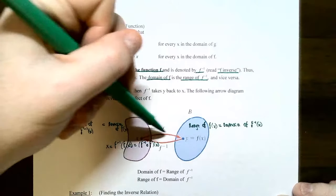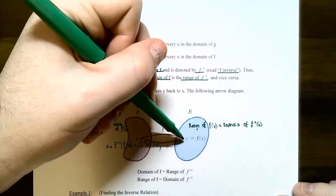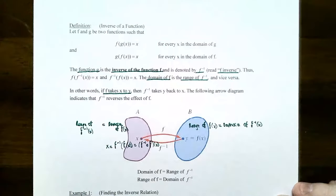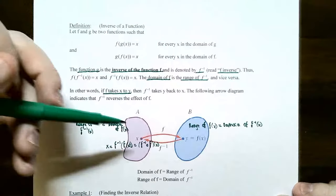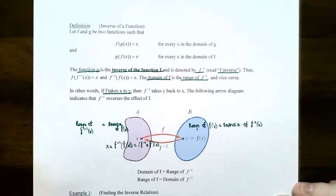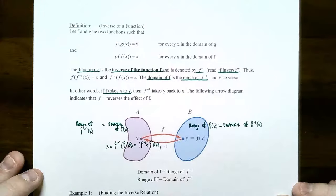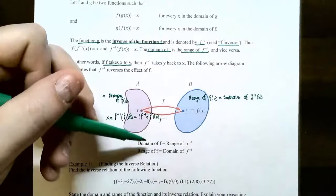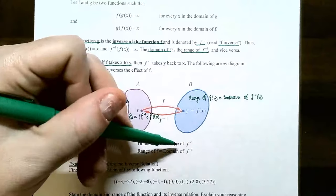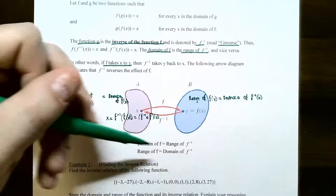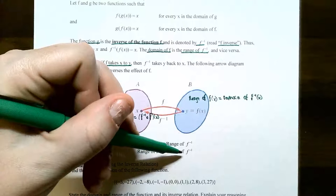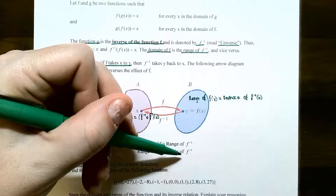Your x goes to a y, and the inverse function sends the y back to x. After doing the composite function, you get the original x back. The property is: the domain of f equals the range of f inverse, and the range of f equals the domain of f inverse.